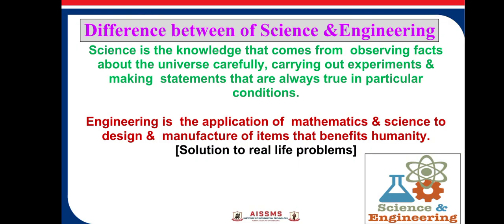A basic question we should be able to answer is the difference between science and engineering. Science is the knowledge that comes from observing facts about the universe, carefully carrying out experiments, and making statements that are always true under particular conditions. Whereas engineering is the application of mathematics and science to the design and manufacture of things that benefit humanity — that is, it is the solution to real-life problems, and engineering has a direct relation with society.